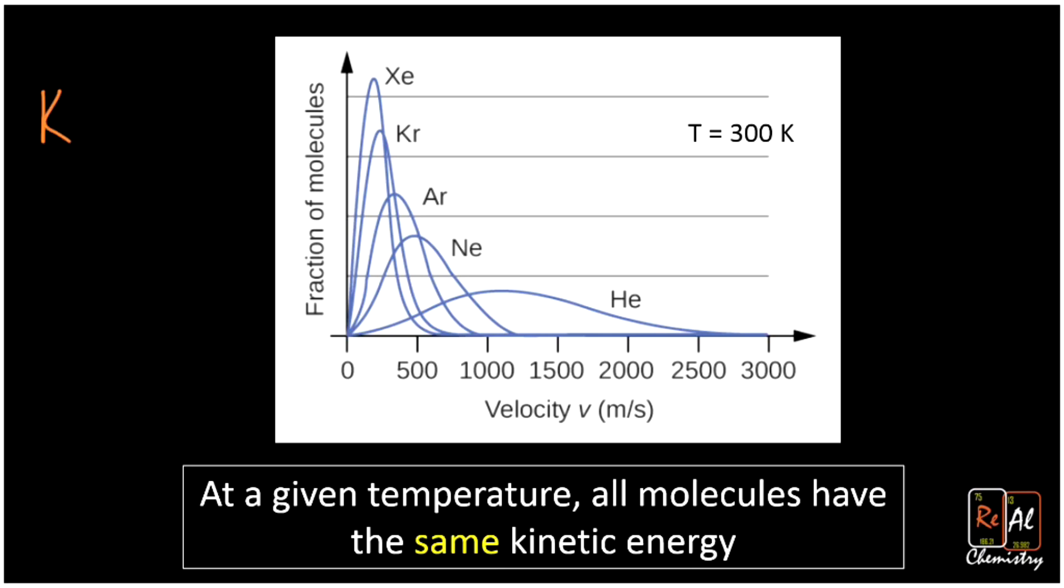Remember that our kinetic energy equation tells us that KE is equal to one-half mass times velocity squared. This KE is our kinetic energy, energy associated with motion, the V is our velocity, and the M is our mass.